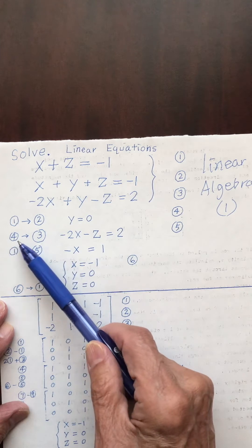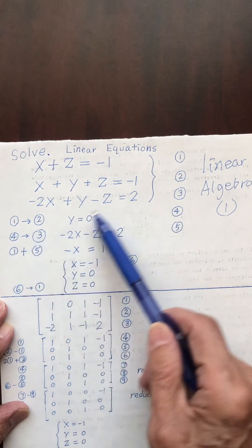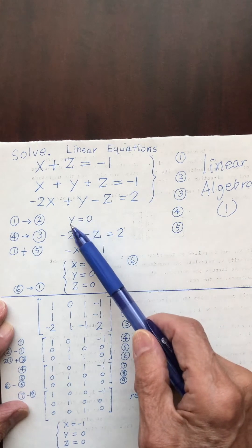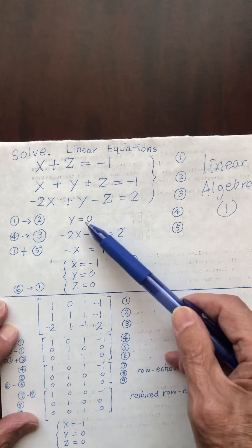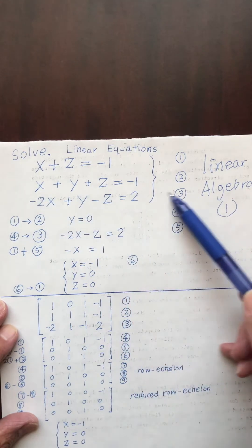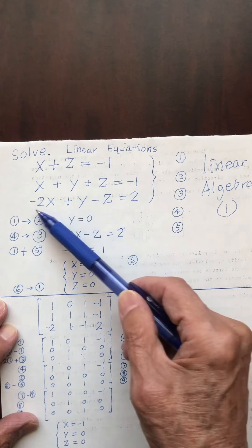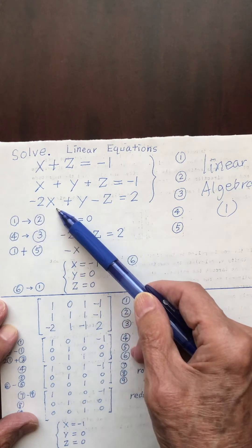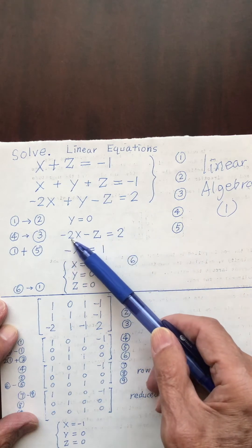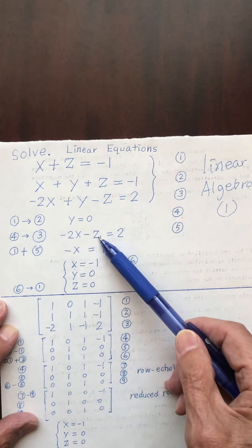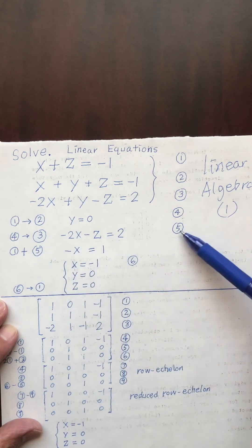Next I substitute equation four into equation three. Equation four is y equals zero, so I substitute y equals zero into equation three — this term becomes zero. Therefore I have negative 2x minus z equals two. I label this as equation five.